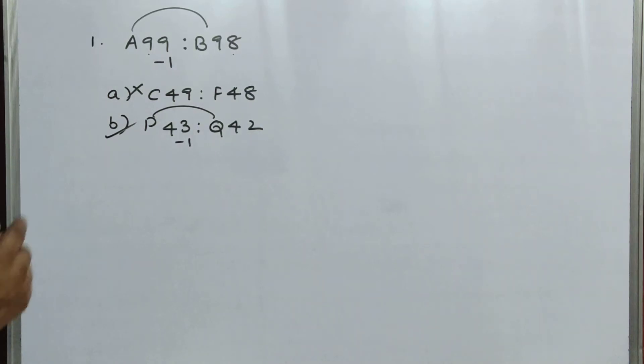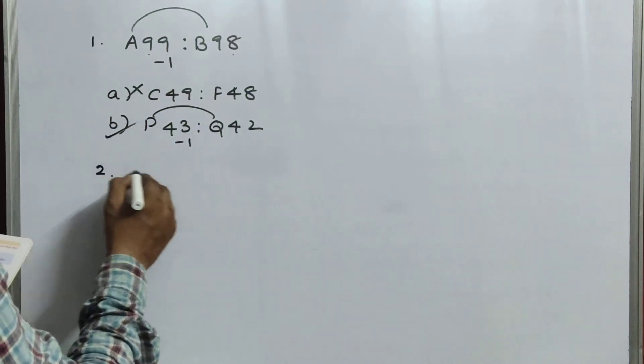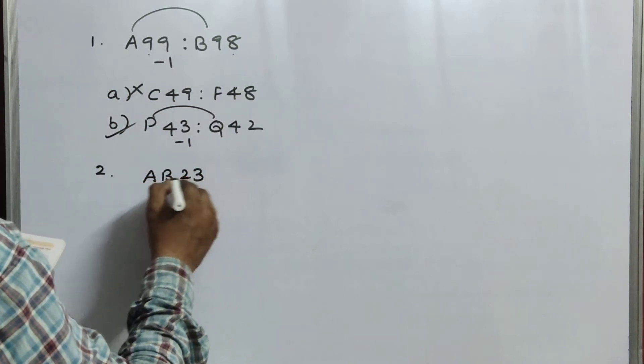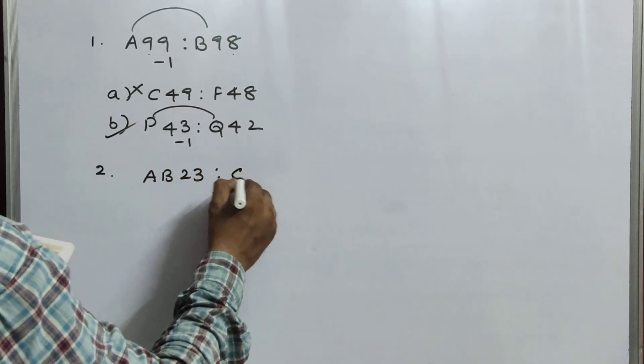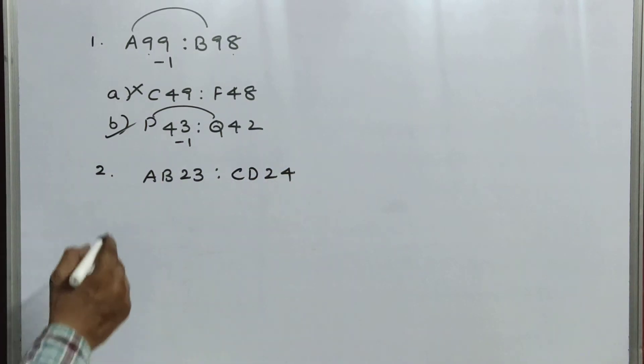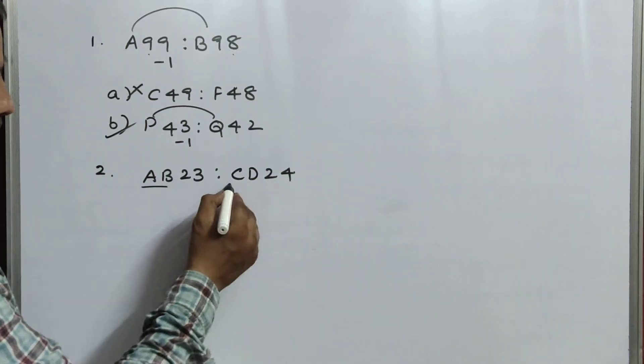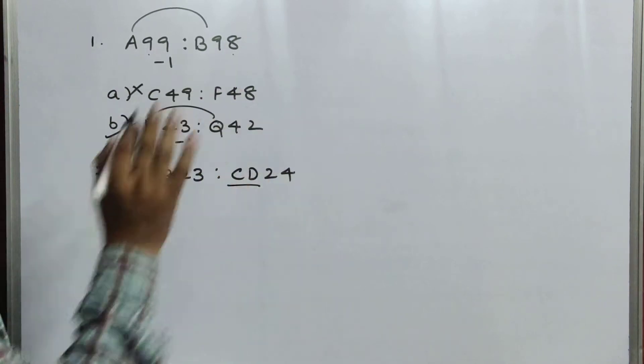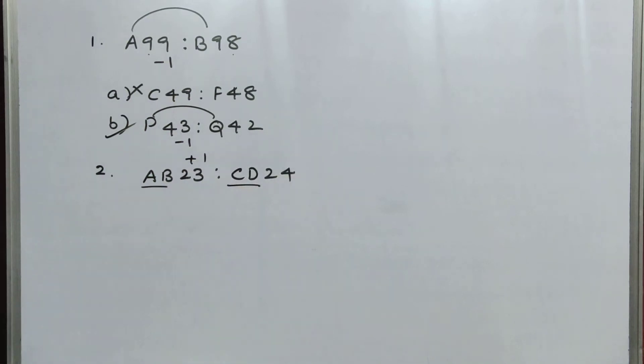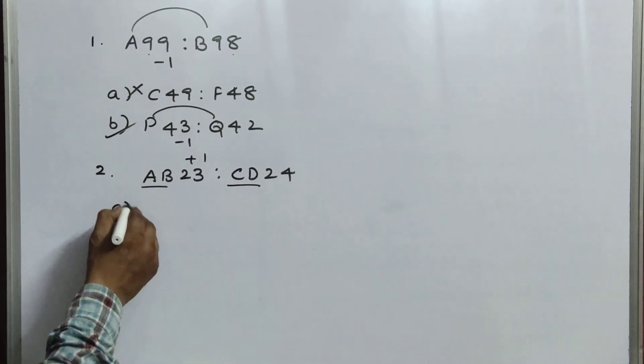Next, we'll go for the second sum children. AB23 is to CD24. Here, also, if you observe clearly, A, B, C, D, that means, continuous alphabets letters, 23 plus 1, that is 24. Now, again, we'll go with options.